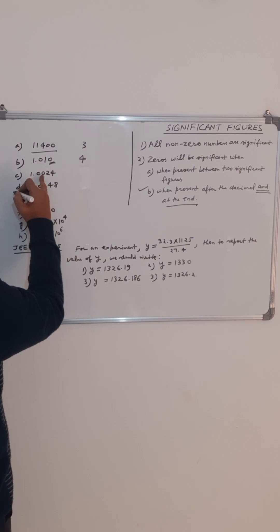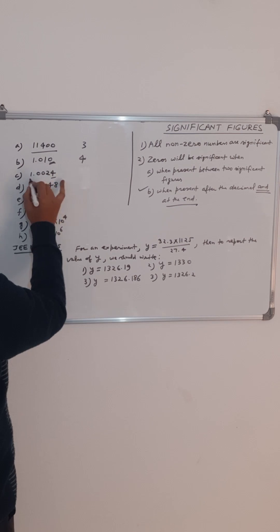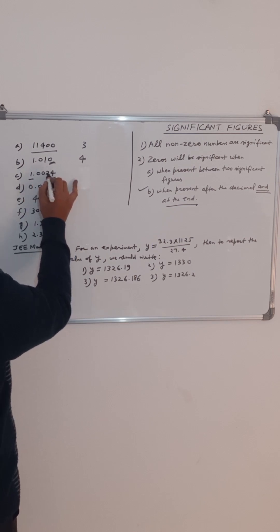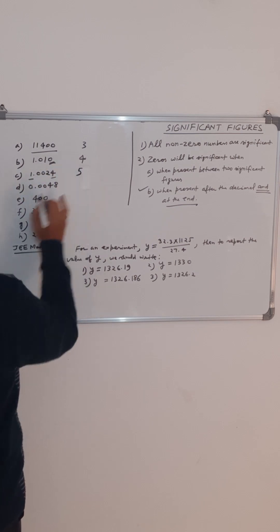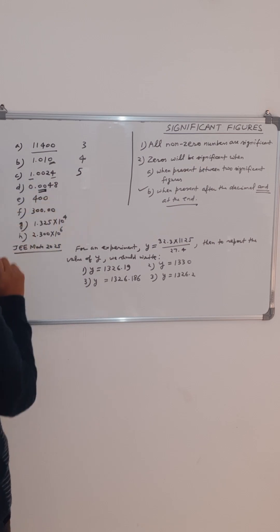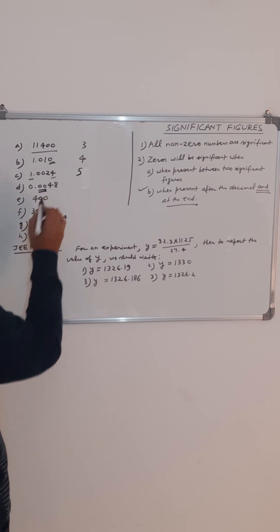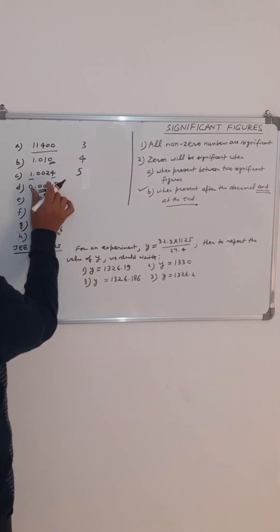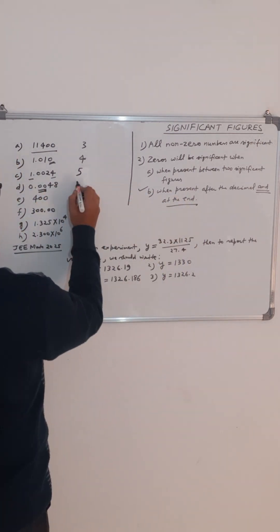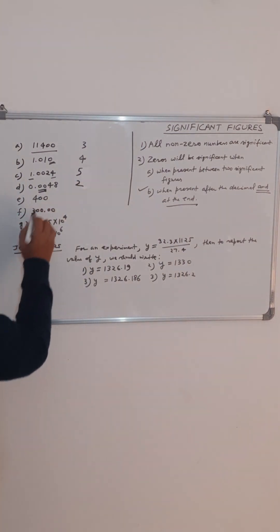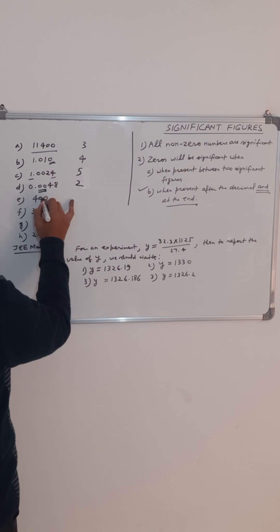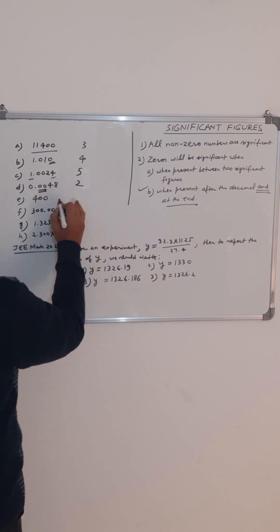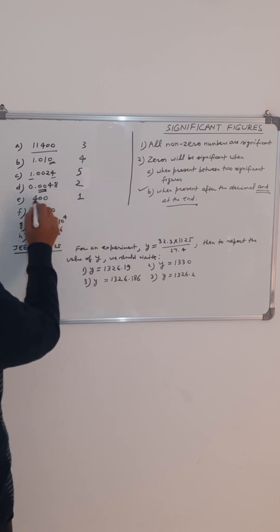In this case, these two zeros will be significant because they are present between two significant figures. So total significant figures will be one, two, three, four, five. Here, these two zeros will not be significant because they are not present after the decimal and at the end — they are present after the decimal but not at the end. So we have only two significant figures. Here these two zeros are not significant because they are not present after the decimal, so only one significant figure, that is four.